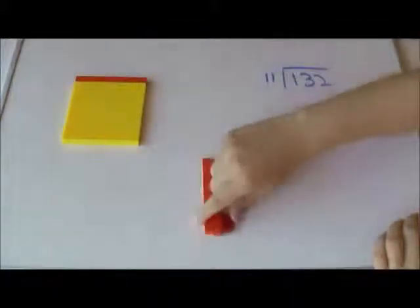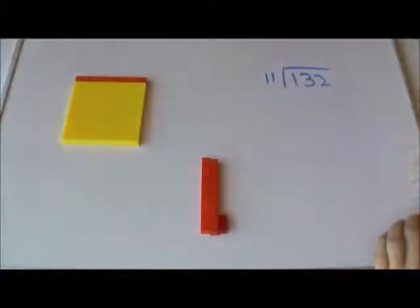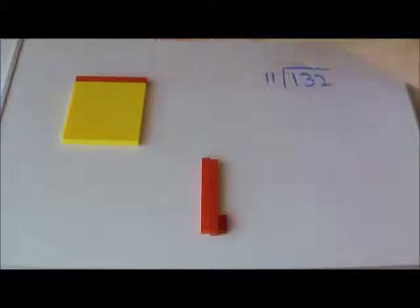Now, can I do that again? No, I can't. I don't have another hundred and ten. So, I am going to write that I have gone across 10. I am going to put a 1 in the tens place because that represents 10.